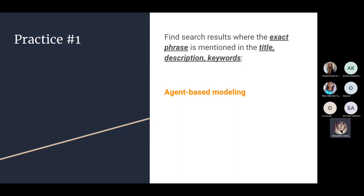We need to find all search results using Scopus advanced search where the exact phrase is mentioned. To look for an exact phrase, we use curly brackets. Curly brackets look for an exact phrase, while quotation marks help us look for an approximate phrase. Our phrase is 'agent-based modeling,' which could be mentioned in title, abstract, and keywords.